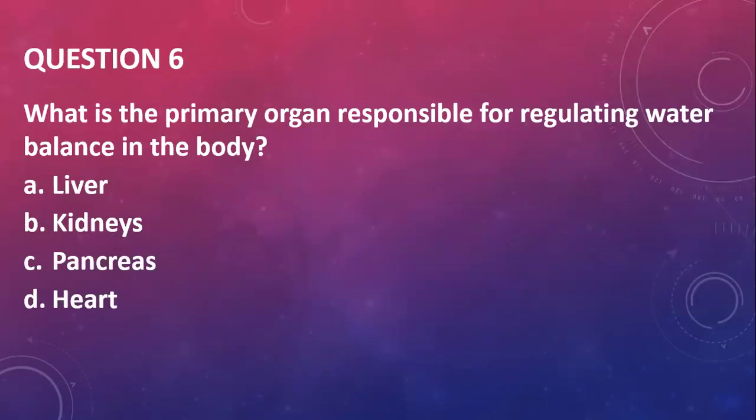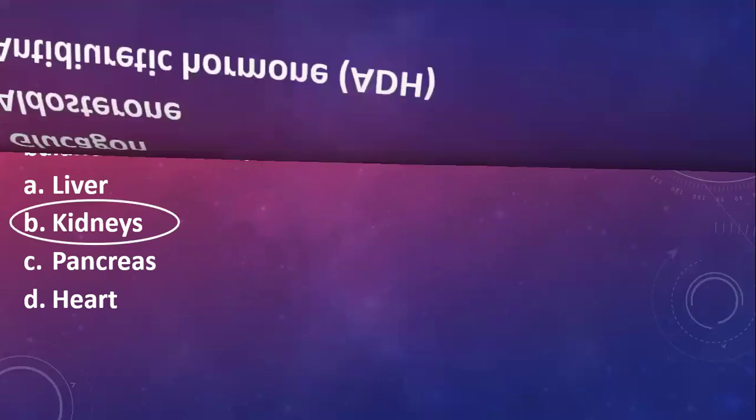Question six: what is the primary organ responsible for regulating water balance in the body? The major organ responsible would be the kidneys.